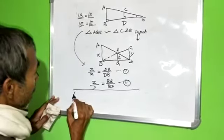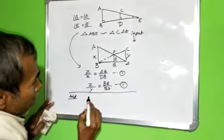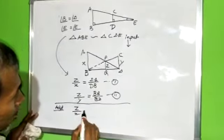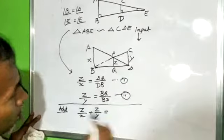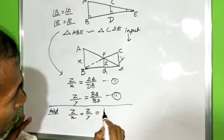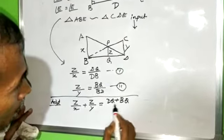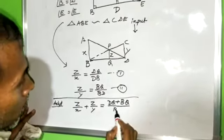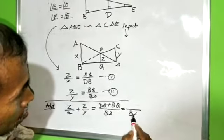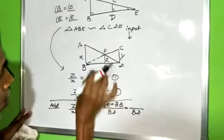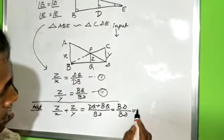What happens? What happens if addition is done? Z by X plus Z by Y equal to DQ plus BQ by BD. BD equal to BD and DQ plus BQ equal to BD equal to 1.